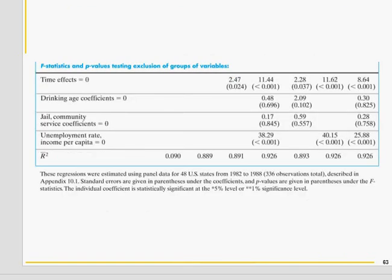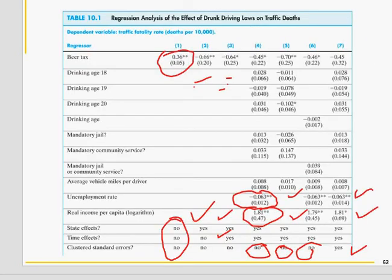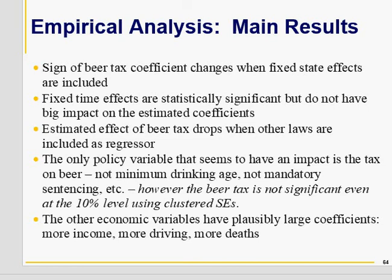If you pick model seven, you don't find a significant effect, which shows that you need further investigation before jumping to the conclusion that an increase in beer tax will lead to lowering the fatality rate. We have seven different models called alternative specifications, and we try to find the best one. These are candidate models and we try to find out through empirical analysis. You can read from the book — fixed effects are statistically significant but do not have a big impact on the coefficients.